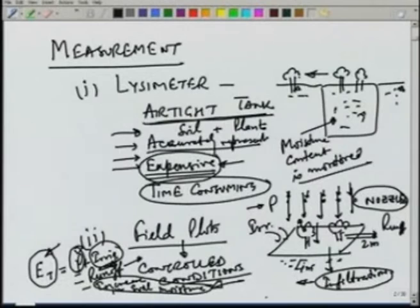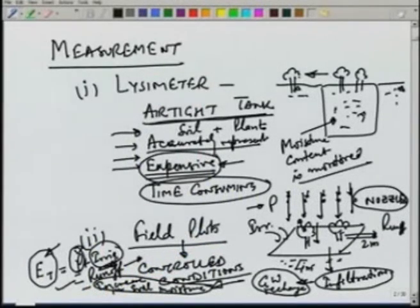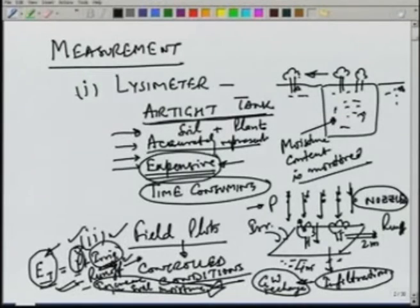One more component typically used in this equation is infiltration, or water loss to groundwater recharge. Out of infiltration, part will be retained in the soil increasing soil moisture, and part will go down and recharge the groundwater. This part is very difficult to estimate, so we try to maintain the soil below the plot at field capacity, minimizing groundwater recharge, and therefore use only precipitation, irrigation, runoff, and soil moisture to estimate evapotranspiration. Using these two methods — either lysimeter or field plot — we can estimate evapotranspiration by measurement.